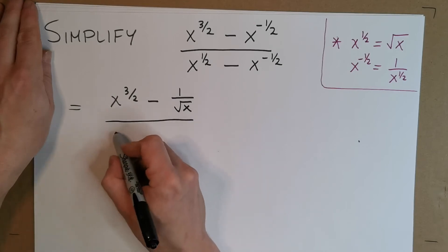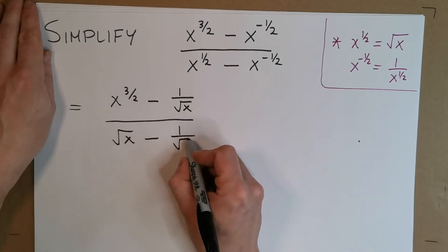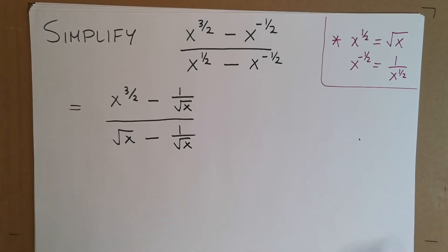And now on the bottom, x to the half, well that's square root of x. And now minus, again it's 1 over square root of x. Now I didn't need to do that, I could have just dealt with x to the half, but I'm just trying to make this in a format that you're used to seeing.